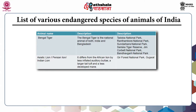The Asiatic lion, also called Persian lion or Indian lion, differs from the African lion by a less inflated auditory bulla, a large tail tuft, and a less developed mane. This animal is found in the Gir Forest National Park in Gujarat.